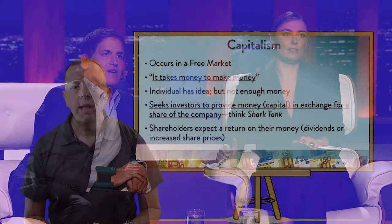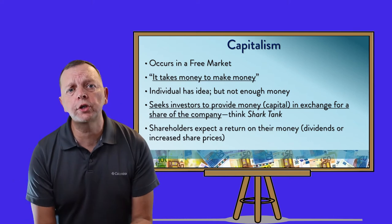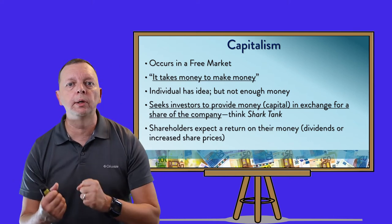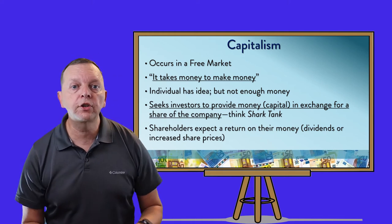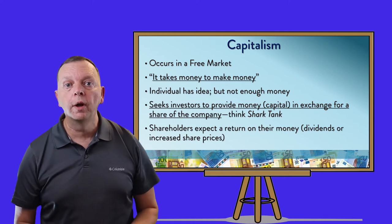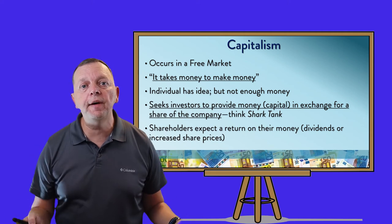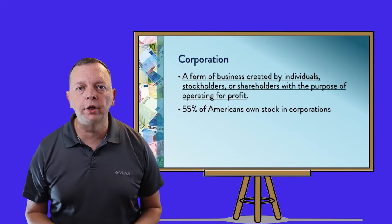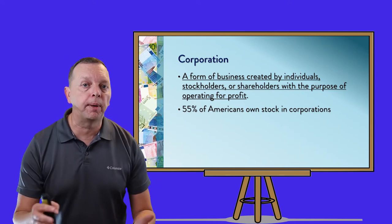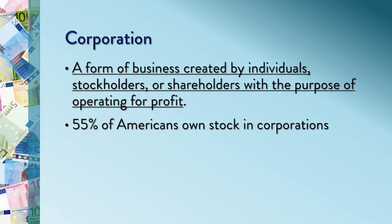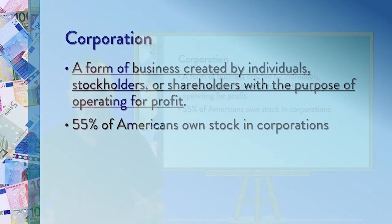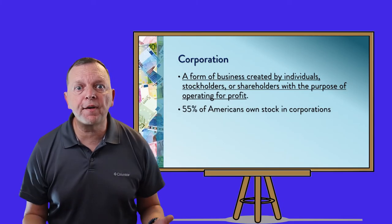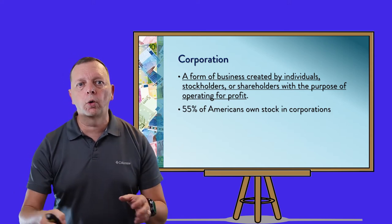"What we'd like to do is offer you $900,000 for 30%, just what you asked for." The reason why investors will give you money is because shareholders are going to be expecting a return on their money, whether it's dividends or seeing the price of the share going up. Because you may have lots of different investors, what you will do is form a corporation — a form of business created by individuals such as stockholders and shareholders with the purpose of operating for a profit. About 55% of all Americans own some stock in corporations. So that's the free market system, where you have lots of freedom.